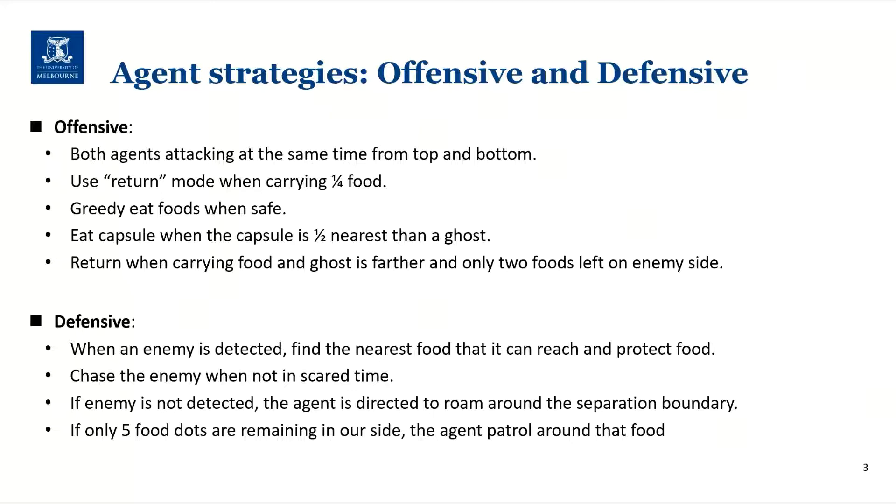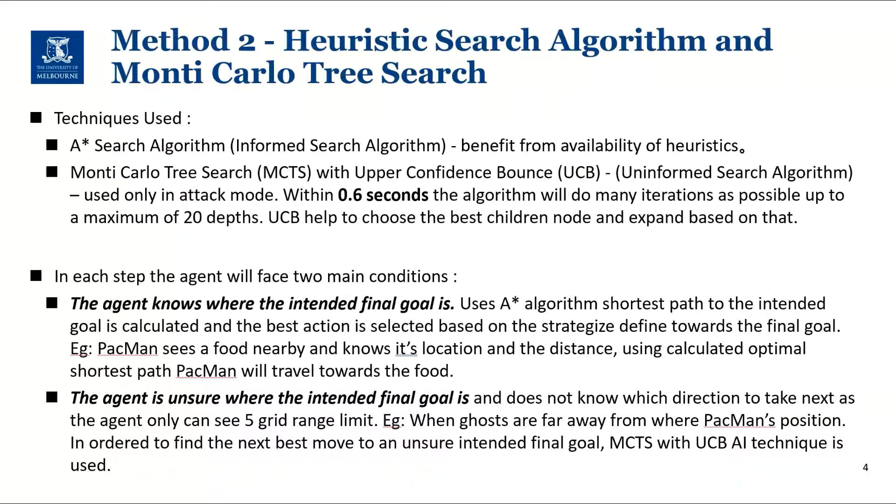Looking at the proper solution, we have used a combination of AI techniques, A star and Monte Carlo with upper confidence bounds. A star benefits from an available heuristic for finding intended goals, and Monte Carlo is used for finding the best possible path for our final goal by building a search tree and taking action.